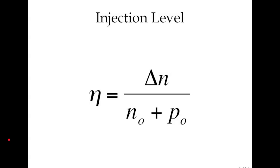I've mentioned the injection level, I want to clarify what that is. It's the excess carrier density divided by the equilibrium carrier density. So that's just how many carriers have I put in with my pulse of laser versus how many carriers were already there at equilibrium.